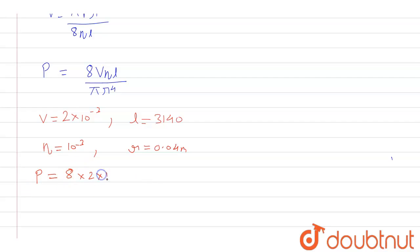Into eta that is 10 raised to the power minus 3 again, into length that is 3140. And this is divided by pi that is 3.14 and into r to the power 4 that is 0.04 to the power 4.